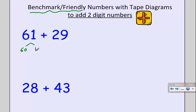29 is also really close to a benchmark number. It's really close to 30. But 29 is made up of 9 and 20. The idea is that we can take 1 away from my 61 and give it to my 29 to make that a 30. Let's check out what this looks like in our tape diagram.